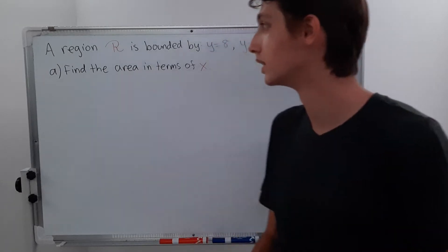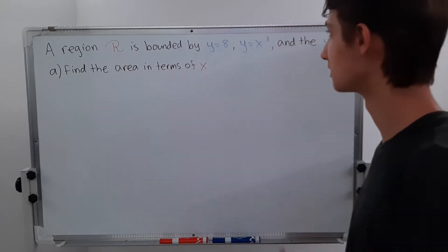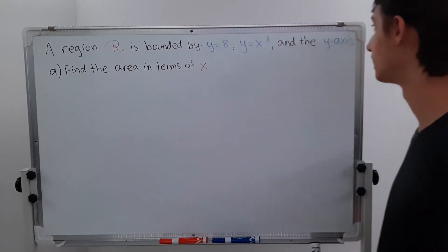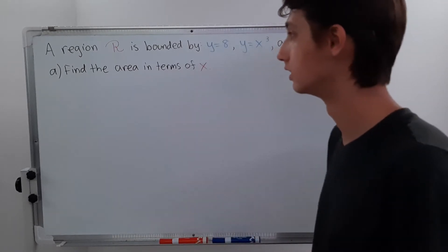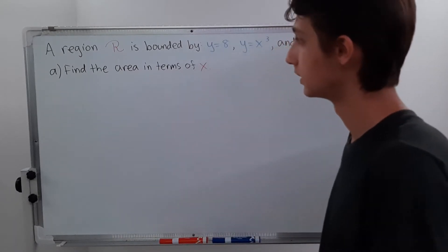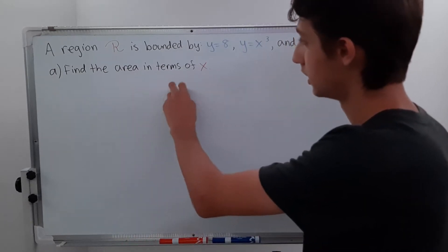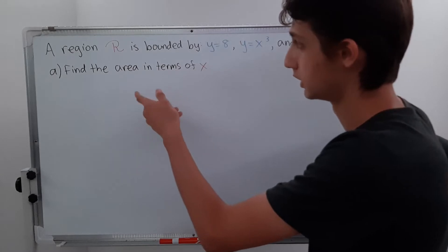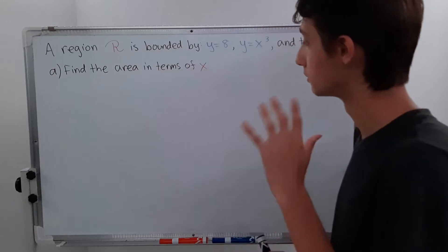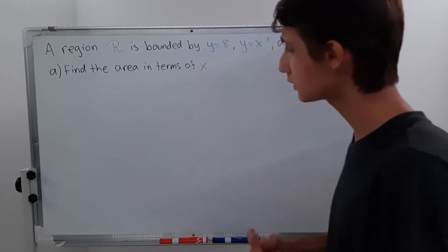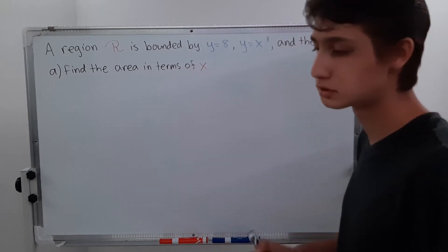We have a region R which is bounded by y equals 8, y equals x cubed, and the y-axis. We're supposed to find the area in terms of x. This doesn't really mean anything for now — it'll mean something when we do part b, which is finding the area in terms of y. For now it's just x, so we just need to set up an integral. First we should draw a picture.